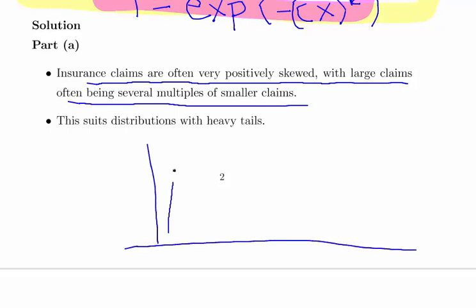So if you just do a quick sketch of one, a lot of really small claims and then a couple of really, really large ones. So just a long tail distribution like that. Positively skewed long tail distribution.